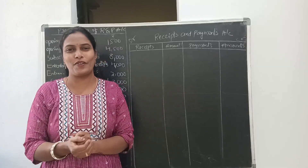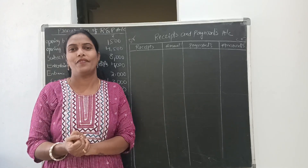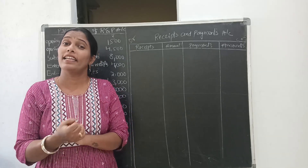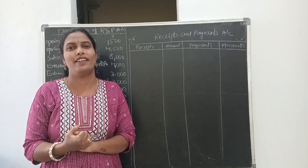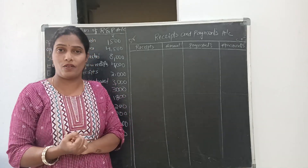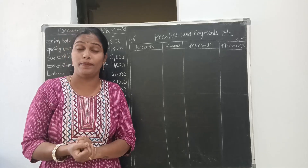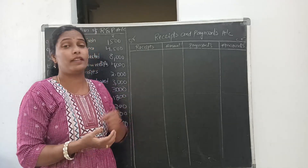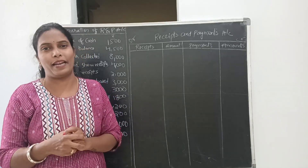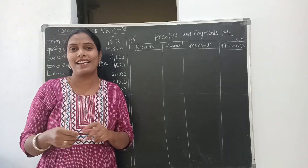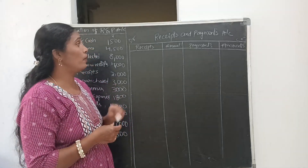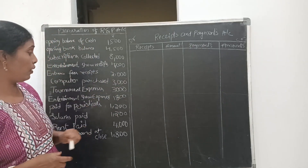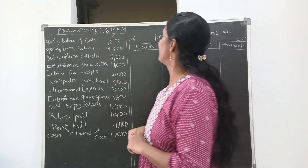Hello students, welcome back to the channel Commerce with Chaitanya. We are in the chapter Not-for-Profit Organization. In our previous classes we successfully learned what is the Receipt and Payment account and accounting terminology in NPO, as well as the pro forma of Receipt and Payment. Today in this class we are going to solve one problem which is a Receipt and Payment problem.